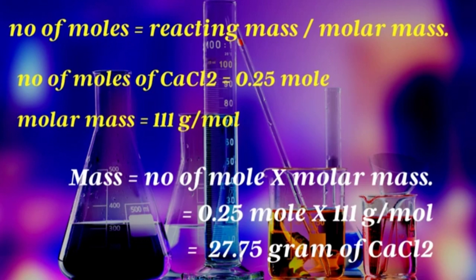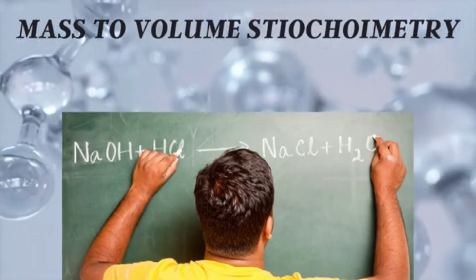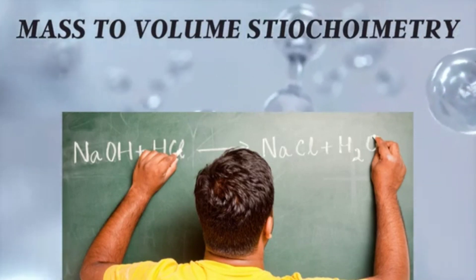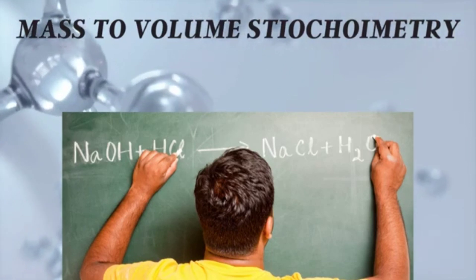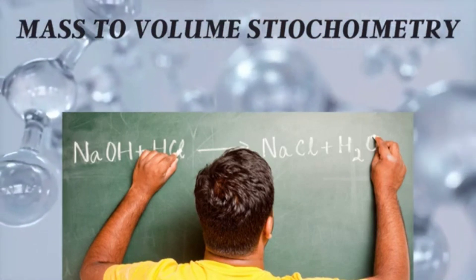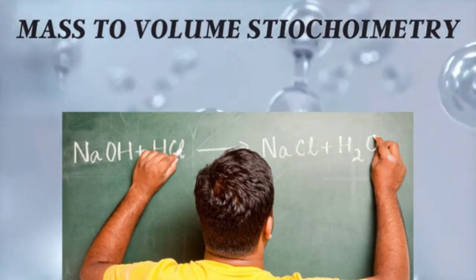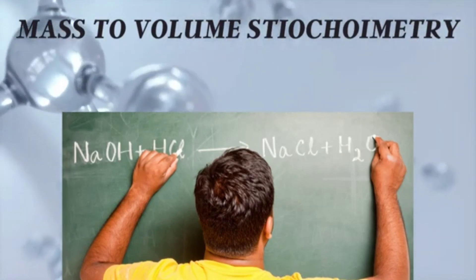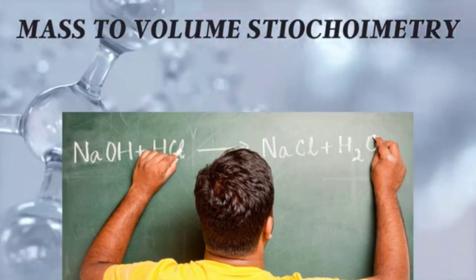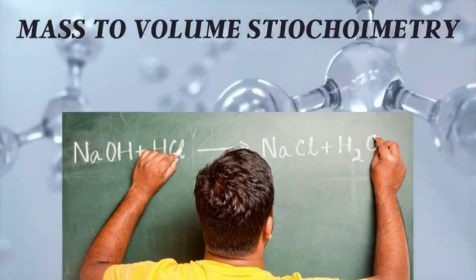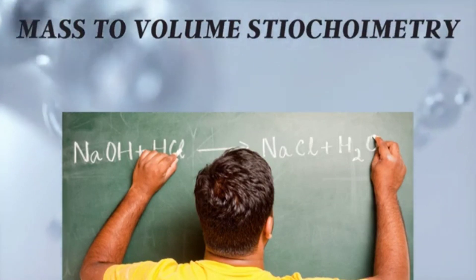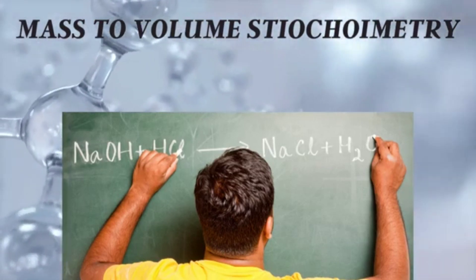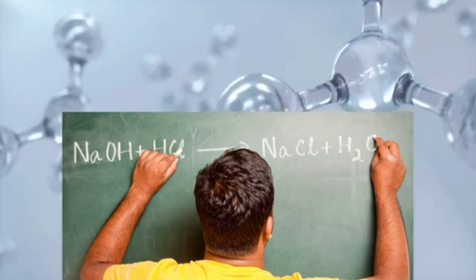As an assignment, try to calculate the mass in grams of calcium carbonate that formed this calcium chloride. Now let's look at mass-to-volume stoichiometry. Recall that one mole of any substance equals its molar mass in grams, and one mole of any substance at STP occupies 22.4 dm³ — this is called the molar volume. With these two relationships we can calculate either mass-to-volume or volume-to-mass conversions.